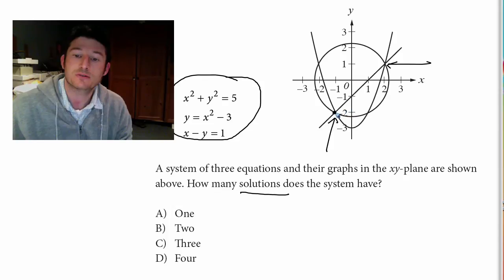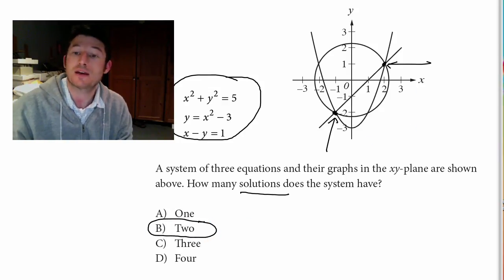Is there a third? No, not that I see. So you've got two intersections of all those graphs. That means there's two solutions. And that is it.